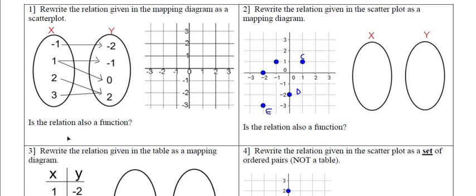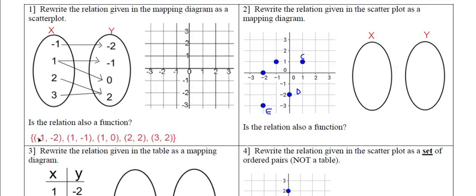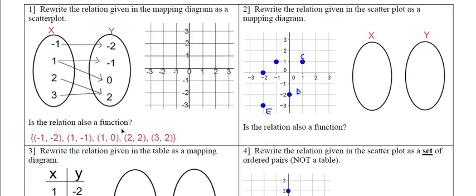And then we can go right into answering the question: is it a relation or a function? Here I wrote down the coordinates for you. You should be able to write down the ordered pairs given a mapping diagram already. If you don't know how to do that yet, I will link a video above that goes through how you can do that. So these are the ordered pairs. Now we're just going to plot the points. Negative one, negative two — easy.